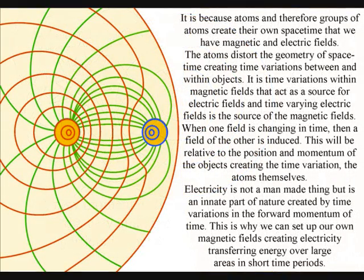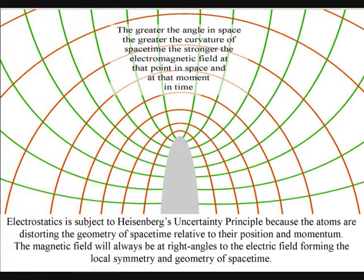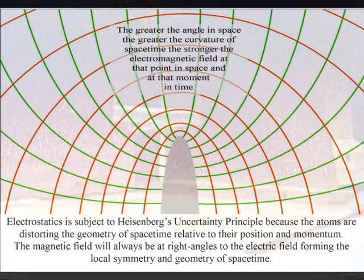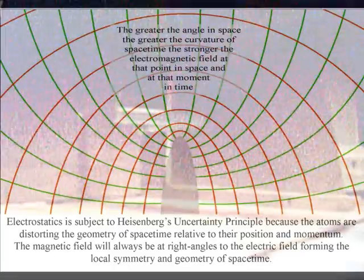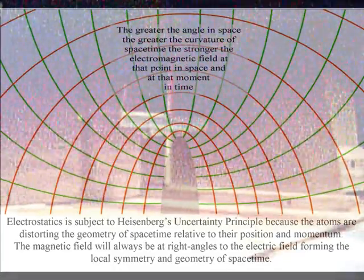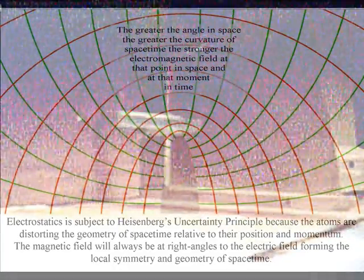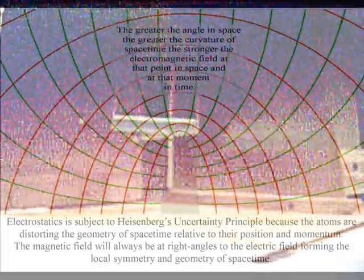This forms a local space-time geometry. A time-varying electric field acts as a source of a magnetic field, and the time-varying magnetic field are the source of electric fields. When either field is changing in time, then a field of the other is induced. This will be relative to the position and momentum of the objects creating the time variation, the atoms themselves.